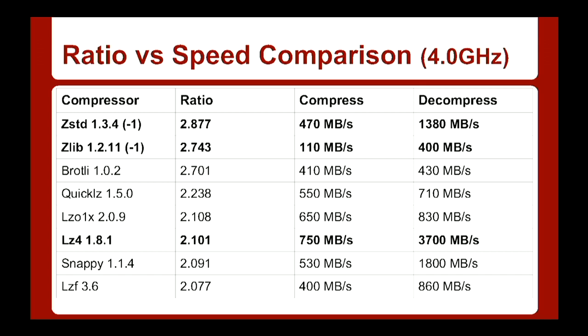To give you an idea of what ZStandard looks like compared to other algorithms: compared to zlib, which powers GZIP, on the Silesia corpus benchmark, ZStandard gets slightly better compression — 2.87 versus 2.74 — but compresses more than four times faster and decompresses quite a bit faster as well. When you compare it to LZ4, it's not as fast for compression and really not as fast for decompression. But remember those speeds are per core, and you probably have quite a few cores.